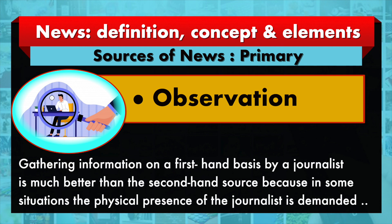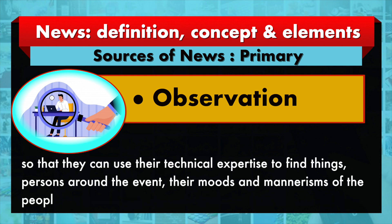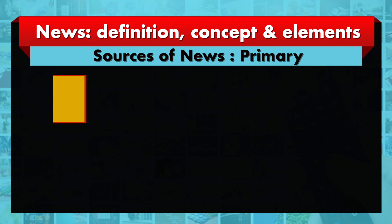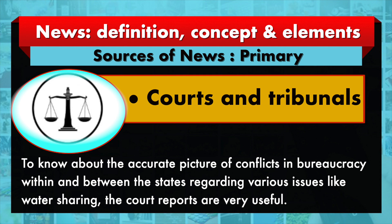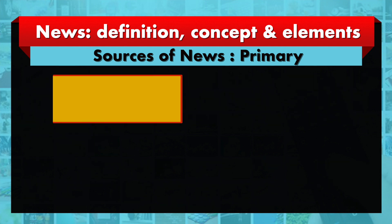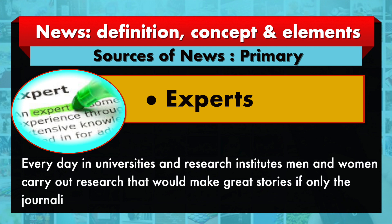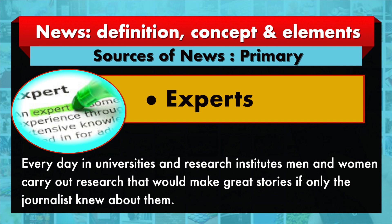Fourth, observation — gathering information on a first-hand basis by a journalist is much better than a second-hand source, because in some situations the physical presence of the journalist is demanded so they can use their technical expertise to find things about people around the event, their moods and mannerisms. Fifth, courts and tribunals — to know about the accurate picture of conflict in bureaucracy within and between states regarding various issues like water sharing, court reports are very useful. Sixth, experts — every day in universities and research institutions, men and women carry out research that would make great stories if only the journalist knew about them.